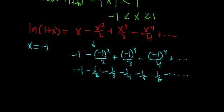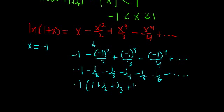Now if we factor out a negative 1, we should see something interesting. Factoring out negative 1, we get 1 plus 1 half plus 1 third plus 1 fourth, and so on. This is a fairly common and well-known series — it's the harmonic series.